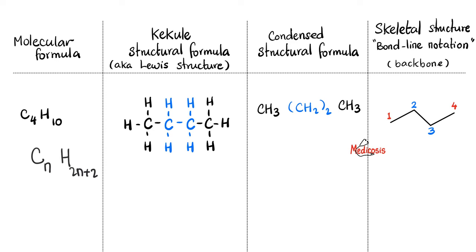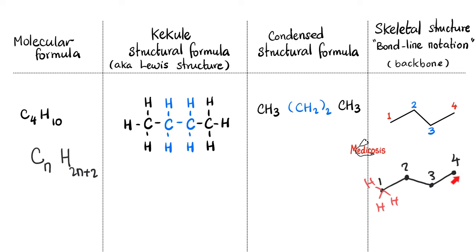The last representation is the skeletal structure or bond-line notation. Since hydrocarbons are always implied, we just draw lines like a backbone. Each endpoint or corner is a carbon. So one carbon, stop and go down — second carbon; go up — third carbon; stop — fourth carbon. The lines are the covalent bonds; the dots (corners) are the carbons. The hydrogens are hidden and implied: a terminal carbon has three hydrogens, an interior carbon has two.